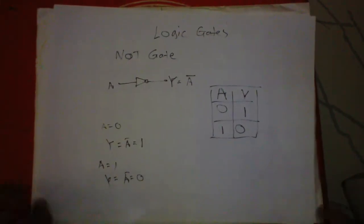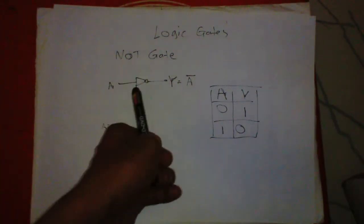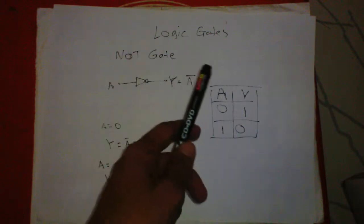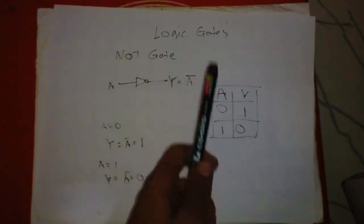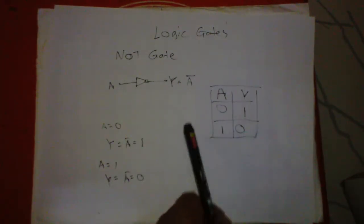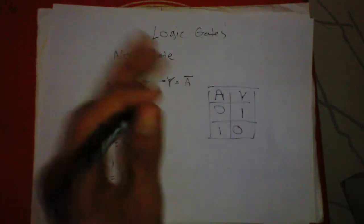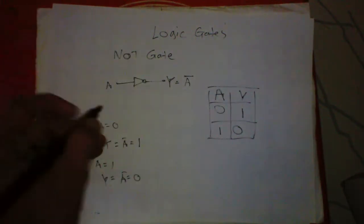The NOT gate is as simple as that. Remember, a NOT gate always has one input and one output. The output will be the inverse of the input. If the input is zero, the output will be one. If the input is one, the output will be zero. Thanks for watching.